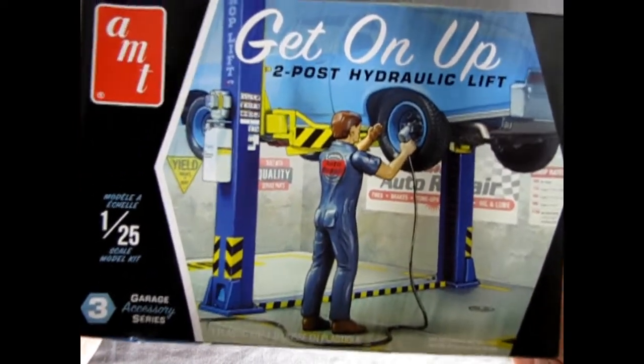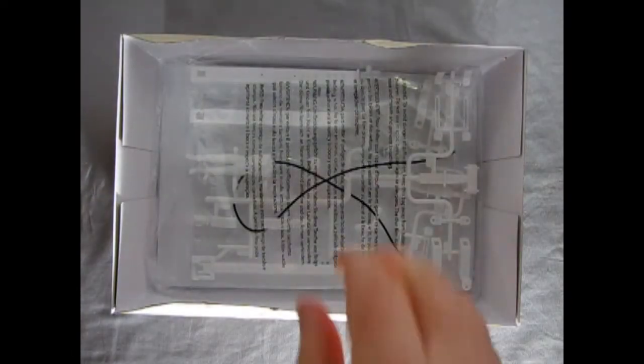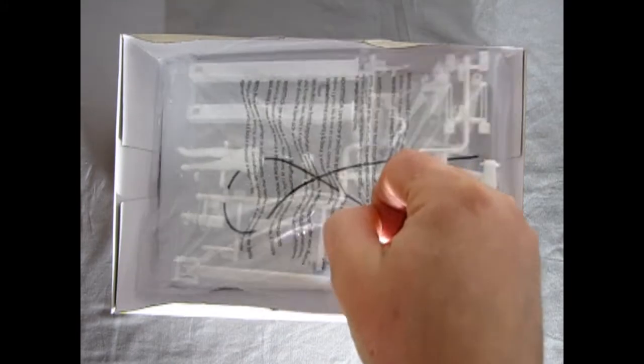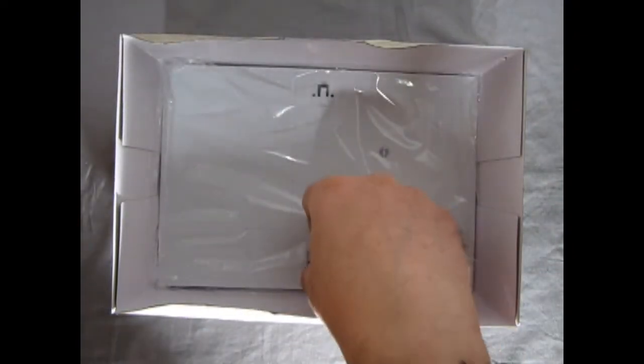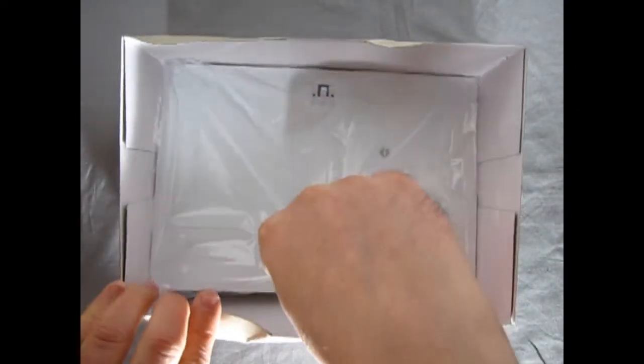And it is a little bit of a tighter lid than our other garage kits. So right away, you can see that we get this nice bag of parts, which includes our air hose and our mechanic and parts of the lift itself. And then we get this really awesome-looking base on the bottom.